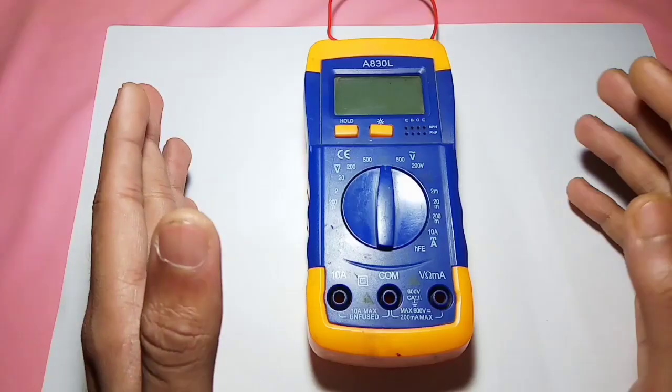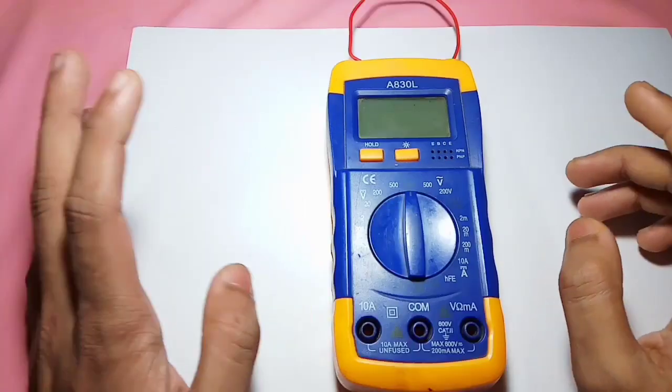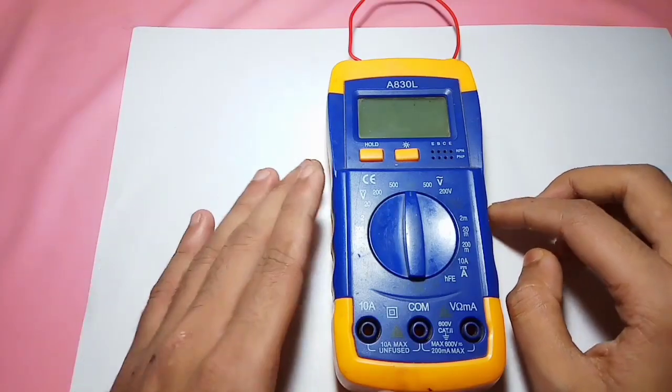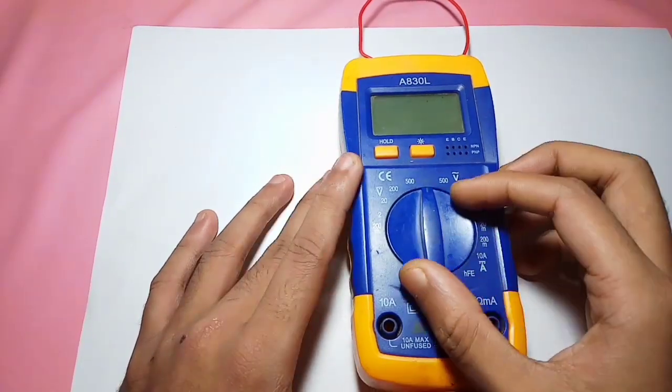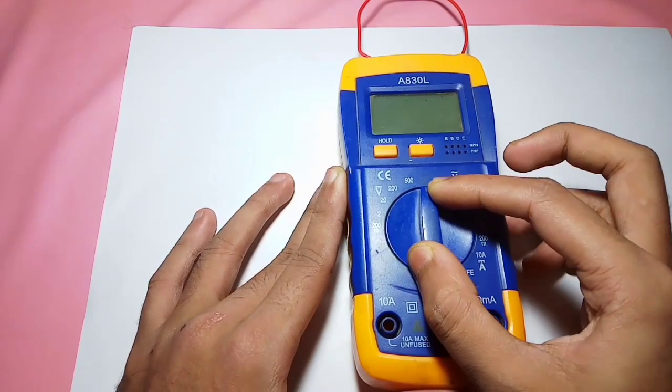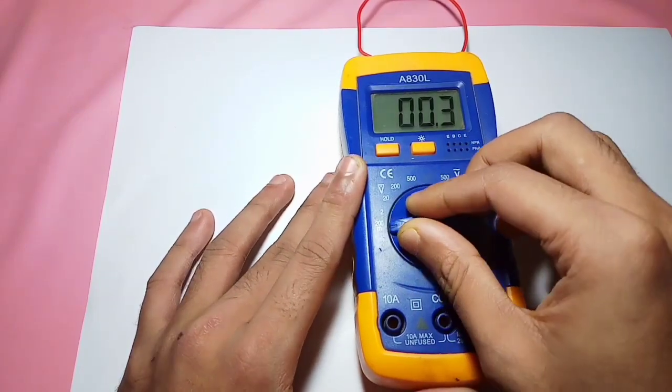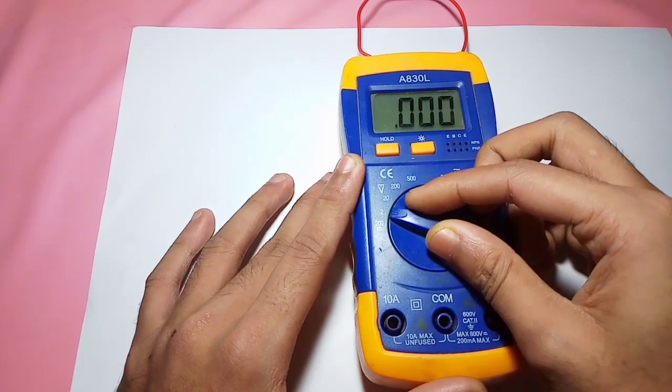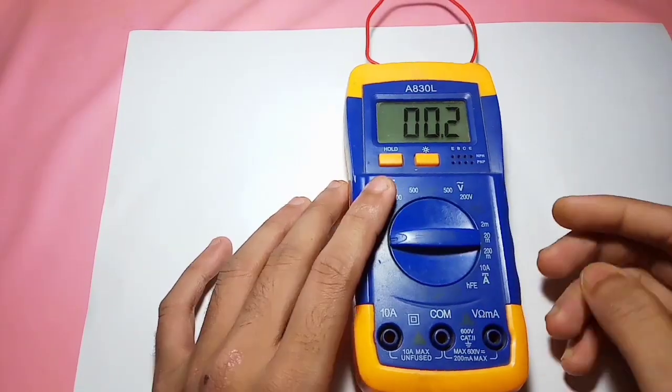You first have to put the knob at 200 millivolts or 2 millivolts. I prefer 200 millivolts, and then you have to turn the switch on. It will turn on the RF measurement function.